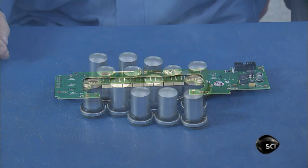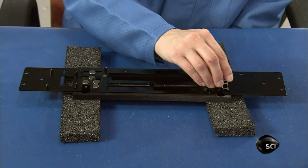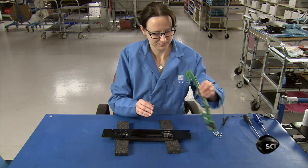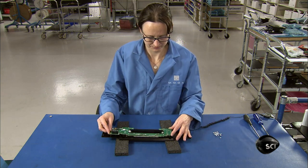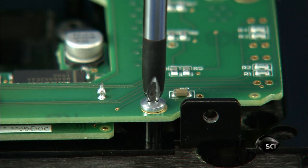They insert brushed aluminum push buttons into the front panel's labeled holes. Then they attach the front panel circuit board. This aligns the push buttons with the corresponding contacts on the board.